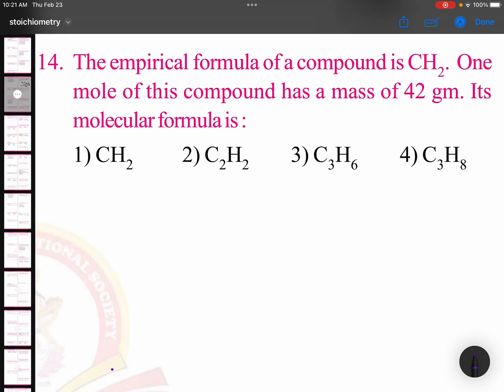The empirical formula of a compound is CH2. One mole of this compound has a mass of 42 grams. Its molecular formula is: Very simple. First, you go with empirical formula, then take empirical formula mass. Carbon is 12.